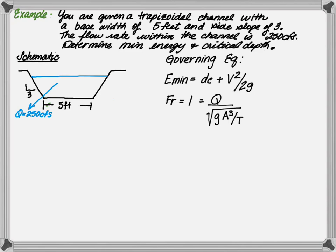In order to find minimum energy and critical depth, we need the specific energy equation. But because we are finding minimum energy, the depth of flow is substituted with the critical depth. And the Froude number equation to find critical depth by substituting the Froude number for 1, setting it equal to the flow rate divided by the square root of g times the area cubed over the top width.